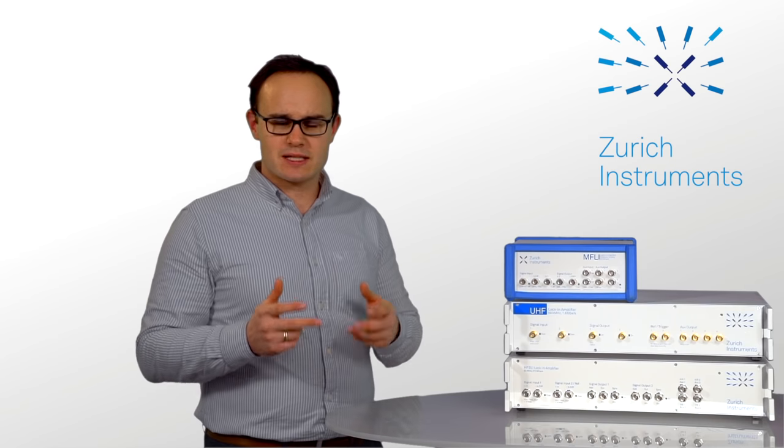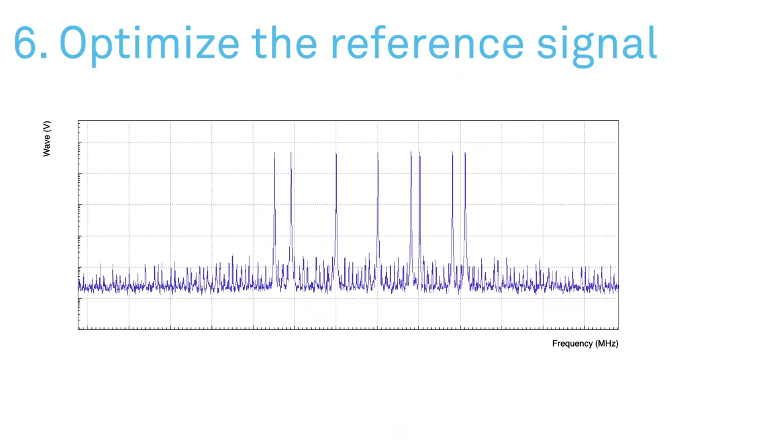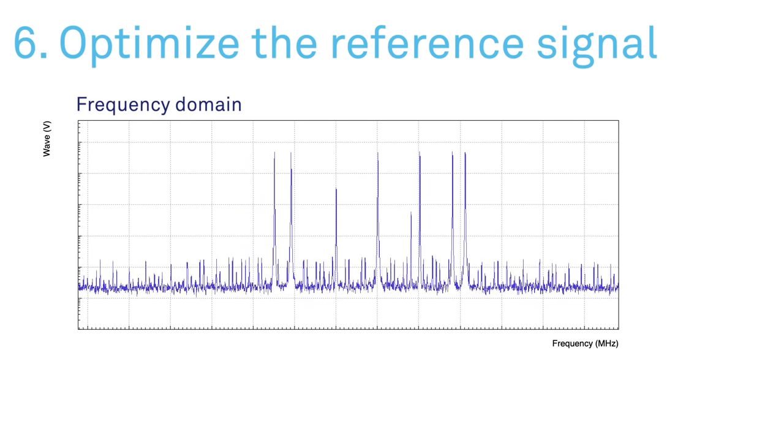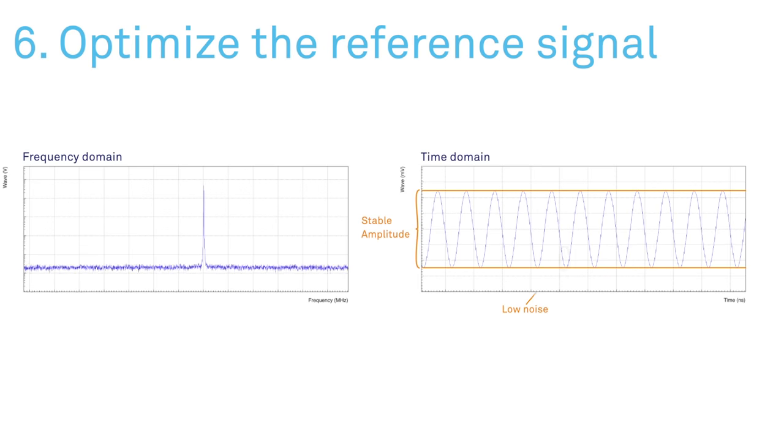If you are doing measurements which rely on an external reference, it is essential to optimize the lock to it. An ideal reference signal contains only one frequency with a stable amplitude and negligible noise.